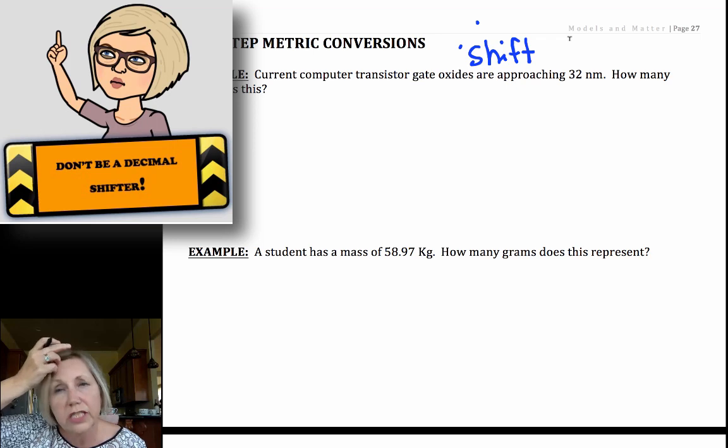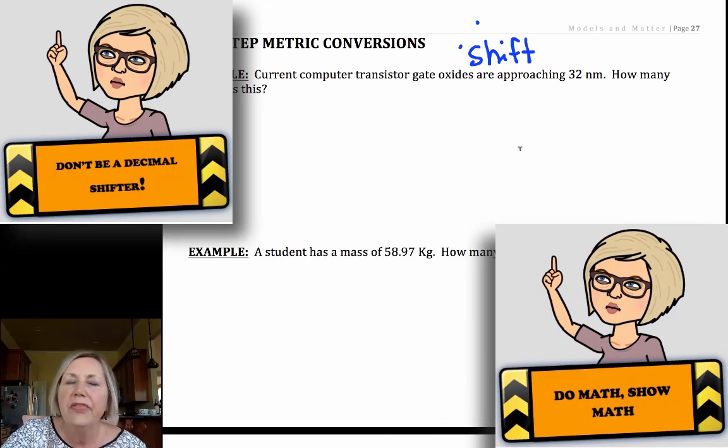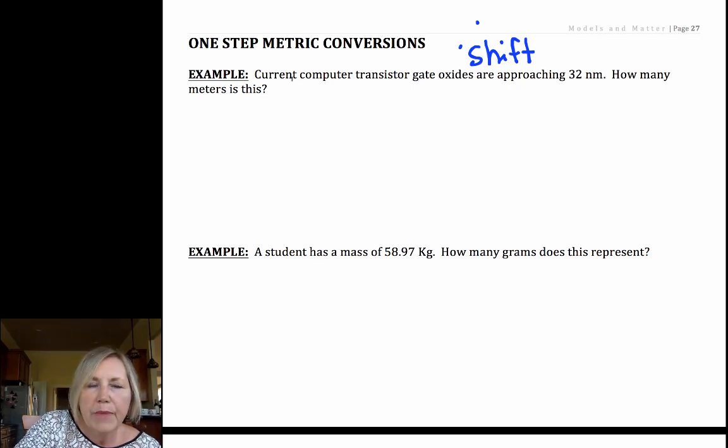And in my class, again, you have to do what your teacher does. But in my class, do math, show math. And that includes all metric conversions. I don't do any decimal shifting. Sometimes in an AP or IB class, you don't have to worry about it. You wouldn't have to show that work, but sometimes you would. You don't know how the points are going to be distributed. So don't be a decimal shifter. Set up your math. Be careful. Do math, show math. So one-step metric conversion is going to be between prefix and a base unit.